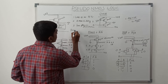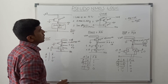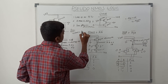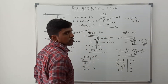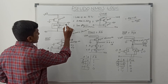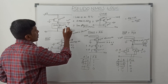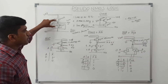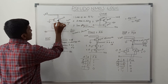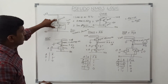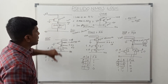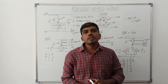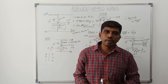The drawback of pseudo-NMOS logic is that static power is high compared to CMOS. When the output is low, both the PMOS transistor and the pull-down network are turned on, creating a direct current path between the PMOS and NMOS, which is the major drawback. I hope you understand the concept well. If you are watching for the first time, kindly subscribe and support us. Thank you.